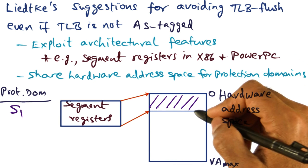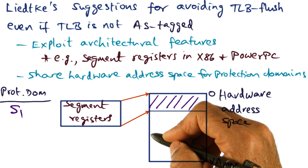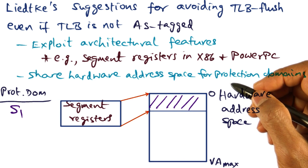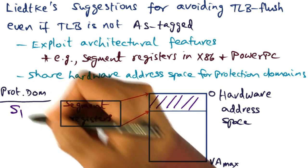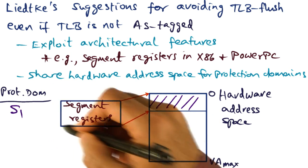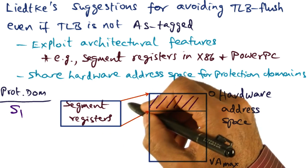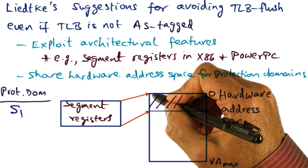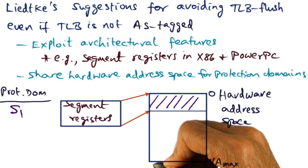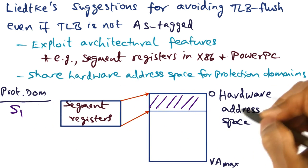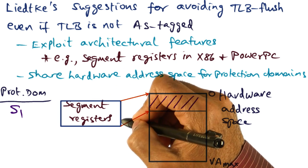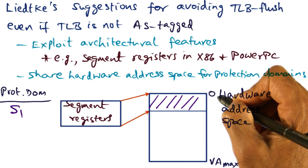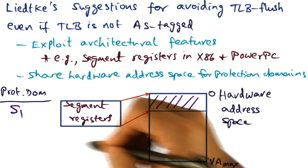If the architecture, such as the PowerPC, offers segment registers to bound the range of virtual addresses that can be legally generated by a running process, then use segment registers to define a protection domain. So here is one protection domain, S1, and it uses segment registers to say that this particular protection domain can generate virtual addresses starting from here to here. Any other virtual address generated by this domain is illegal, and the hardware will check that because the segment registers are a hardware-provided facility for bounding the range of legal virtual addresses.